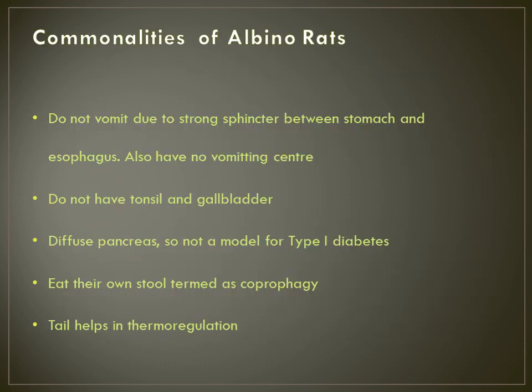What are the commonalities between Wistar, Sprague-Dawley, and other albino rats? They do not vomit because they have a strong sphincter between the stomach and esophagus, and they also have no vomiting center. They do not have tonsils or a gallbladder. They have a diffused pancreas, so it is not recommended to study type 1 diabetes with these rats. They eat their own stool pieces — this is termed coprophagy — and their tail helps in thermoregulation.